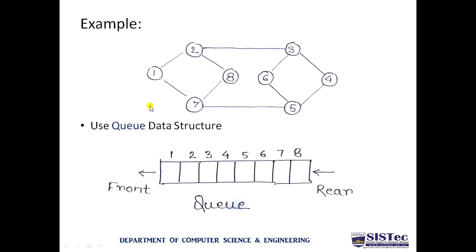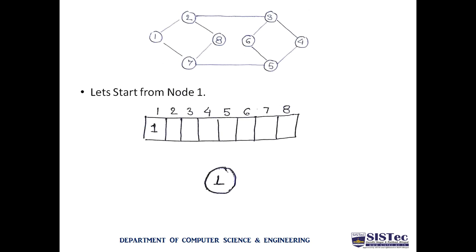Let us take an example. Suppose we have a graph and we need to find the traversal sequence using the breadth-first search approach. For this purpose, we use the queue data structure. A queue has two ends: the front end and the rear end. Elements are inserted from the rear end and deleted from the front end. It follows the FIFO order — the element inserted first is deleted first.